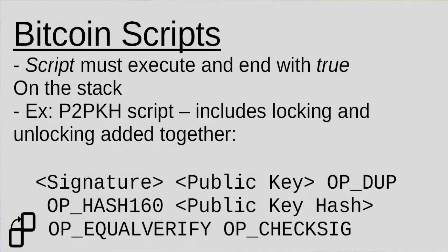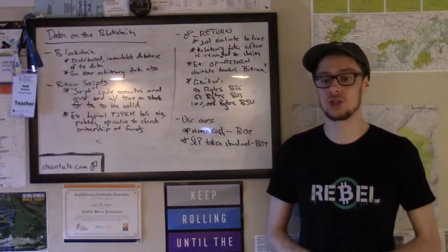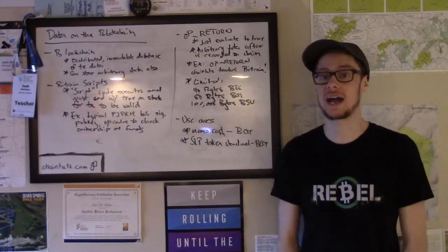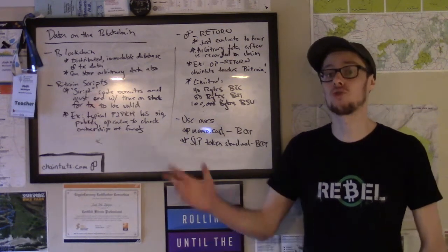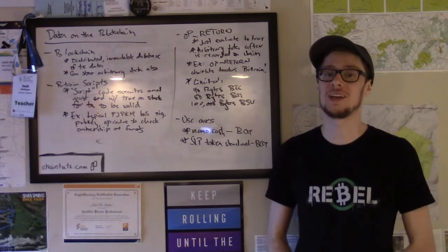In order for a transaction to be considered valid, when the script executes with both the locking condition and the unlocking condition run together, we must end up with true on the execution stack. Script is a stack-based language — data is pushed on and off of an execution stack as we go through the opcodes in the script, and a transaction is only considered valid if we end up with true when that script execution is finished.